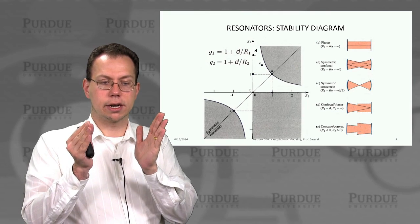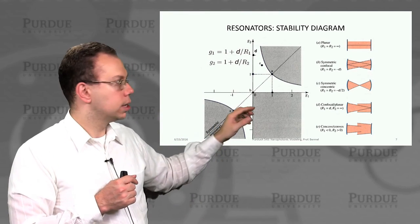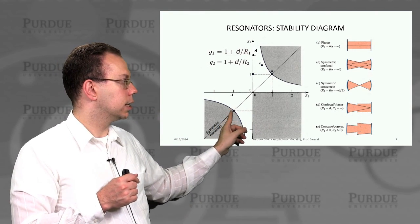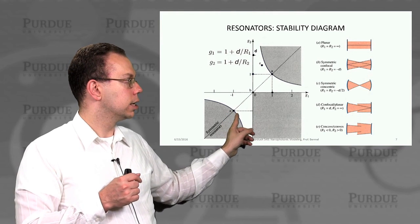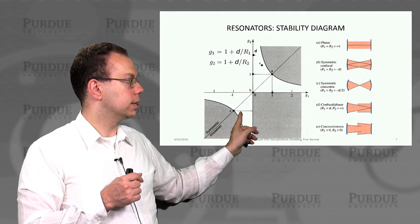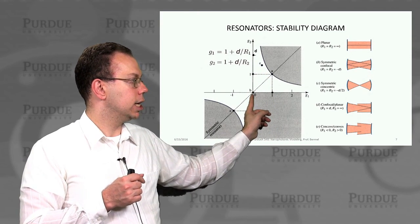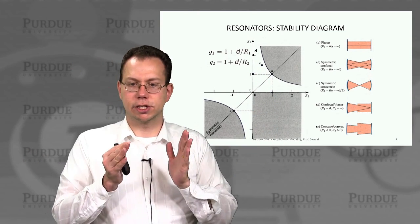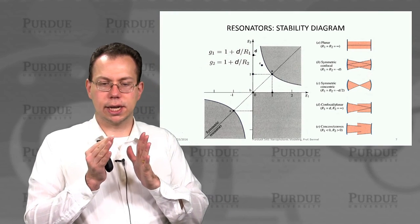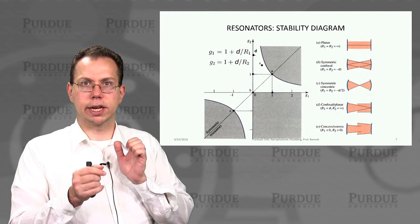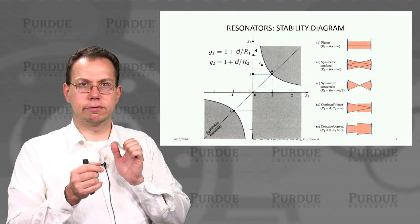Some of the other cases, however, are not going to be stable. You can see this one is on the borderline, the symmetric concentrator, but there are other ones, like B, with the symmetric confocal lens that could be unstable if either of the elements is negative but not both.